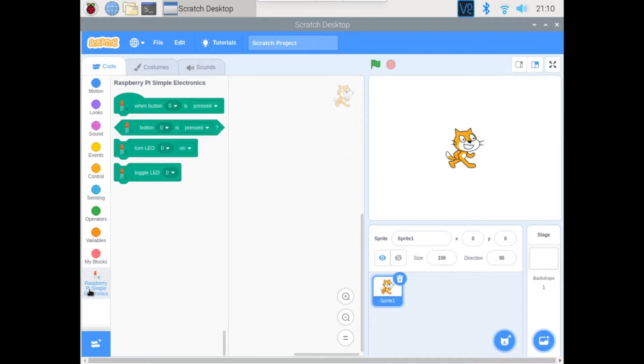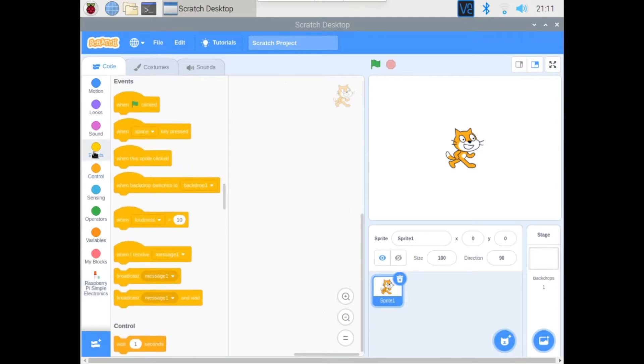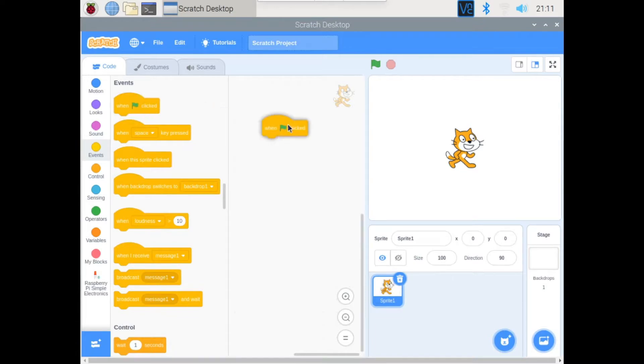As you can see, we have a new palette. In that palette right now we have four blocks - button GPIO number is pressed or released, then you will either turn LED GPIO pin on or off. To make a traffic lights program we need to go to Events, grab the green flag clicked and drop it here.